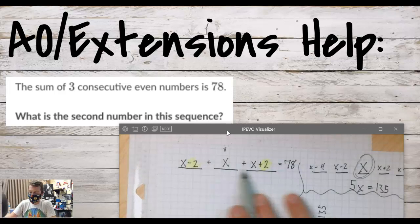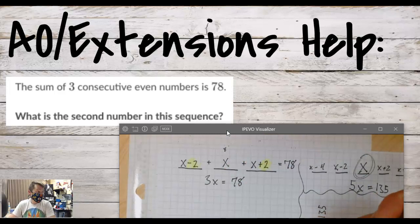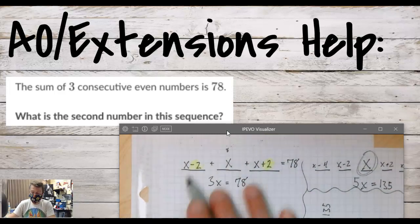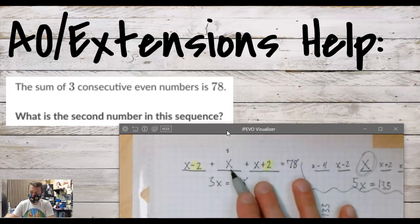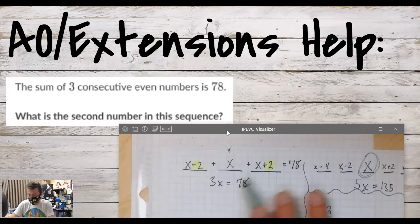So when we go to add all these up, we just get 3x equals 78. Now this only happens if you set it up the way that we set it up, with x being that second value and then minus 2 and the plus 2 canceling out.